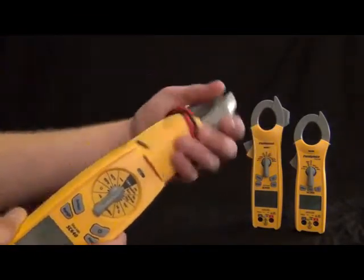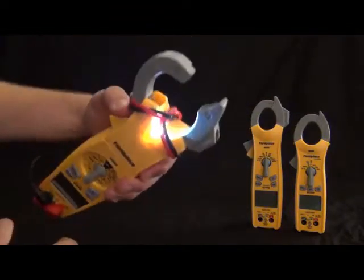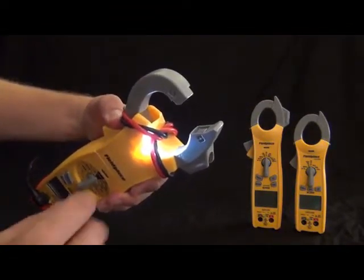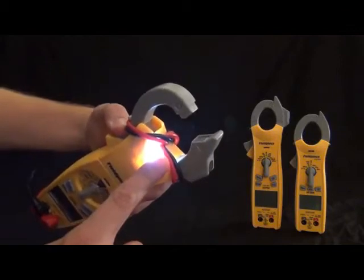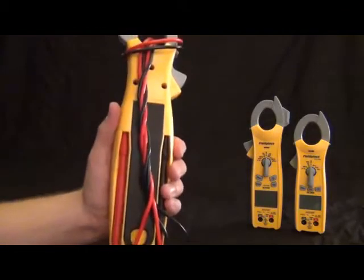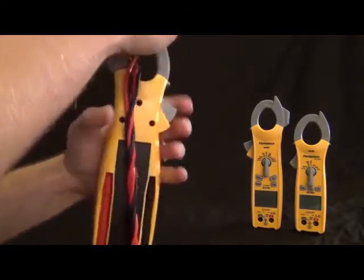And with the swivel clamp we got the jaw light on the top so you can see in dark places. And this also has lead storage in the back. I have my leads wrapped around the clamp and I can just tuck my leads away right in the back.